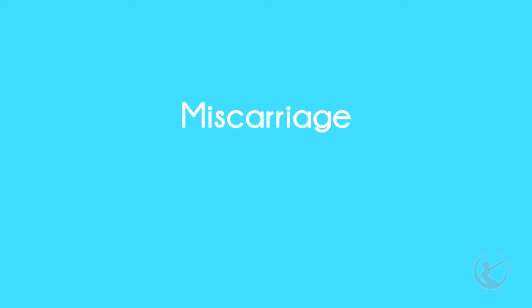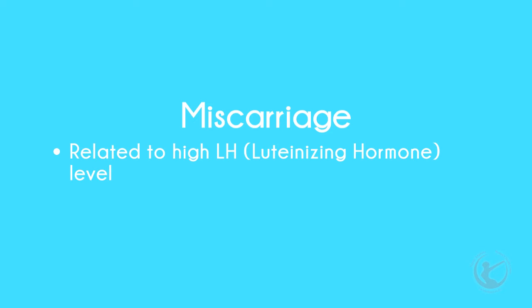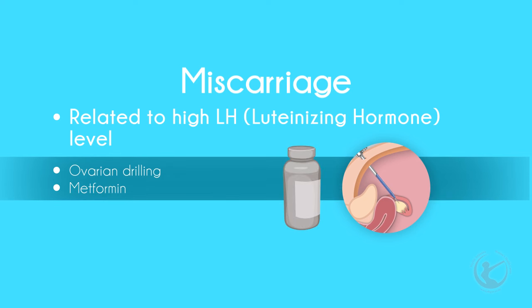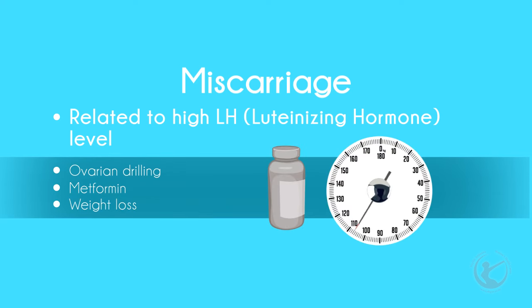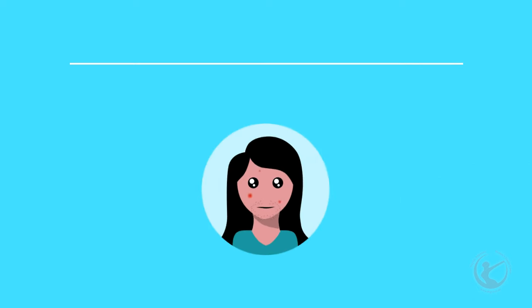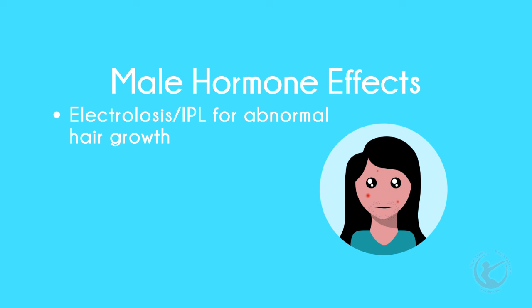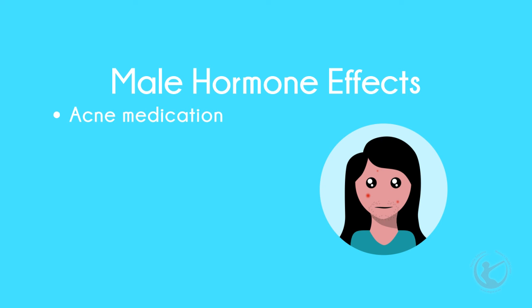Miscarriage: recurrent miscarriages are related to a high LH level. In women with high LH levels, ovarian drilling is advised. Metformin may also be used to drop these levels, as does weight loss. Male hormone effects: pills containing cyproterone acetate, or cyproterone acetate itself, or a diuretic called spironolactone, can all be used to control male hormone effects. These should not be used if a patient is trying to conceive. Electrolysis or IPL can be used for abnormal hair growth. Anti-acne medication may also help, but is also contraindicated when contemplating pregnancy.